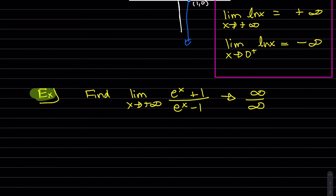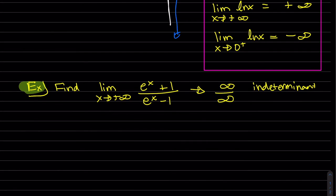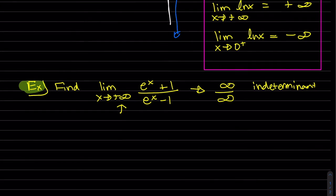So this is indeterminate, just like 0 over 0. So we have a little bit of work to do. Since this is going to infinity, we can use our rule.